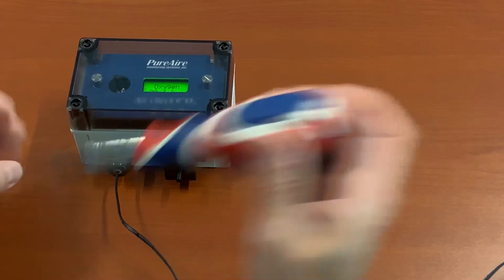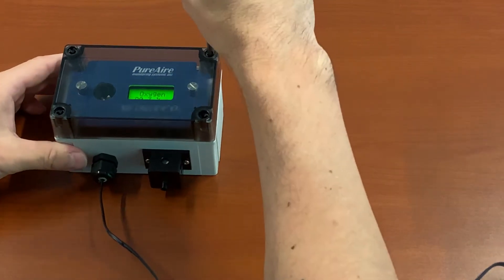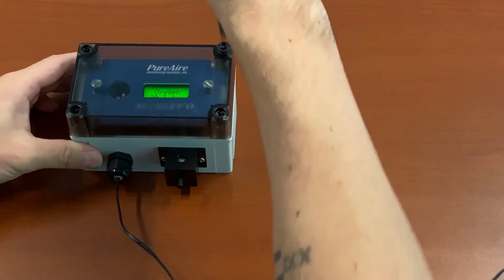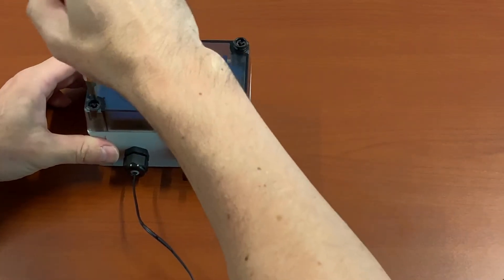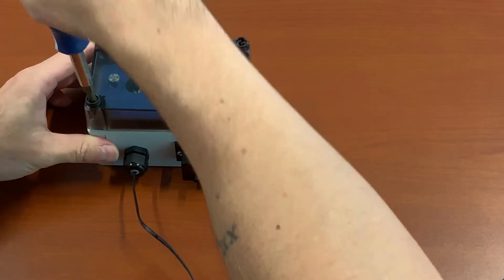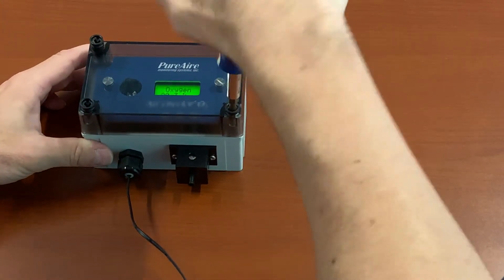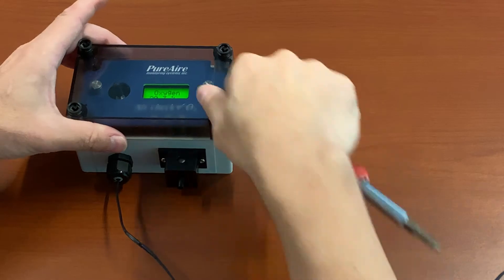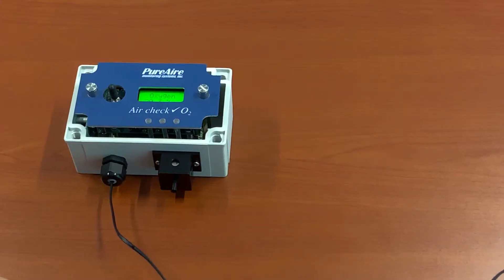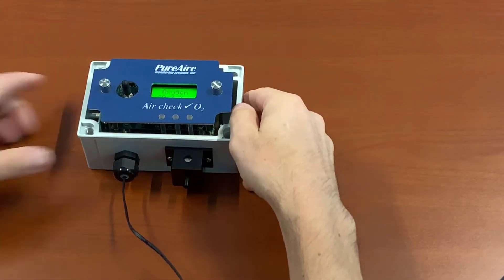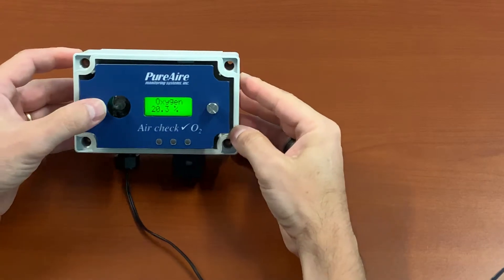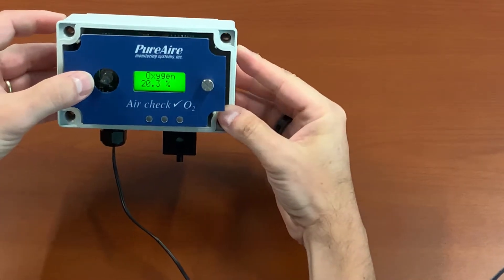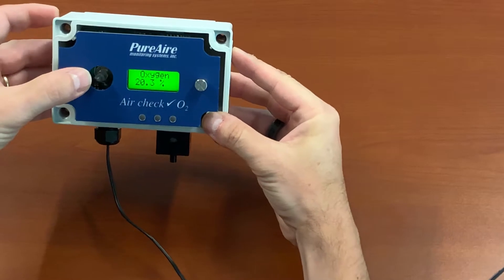All you should need for this is a Phillips-head screwdriver to remove your protective cover for the enclosure. Once you get that out of the way, you'll notice right now the monitor is reading 20.3%, so we need to bump that up to 20.9.